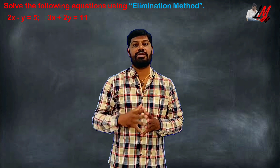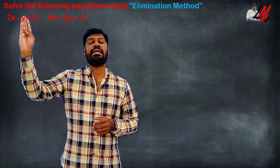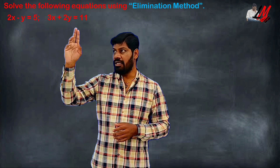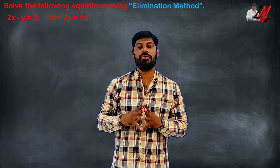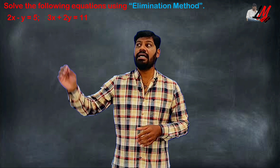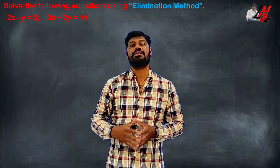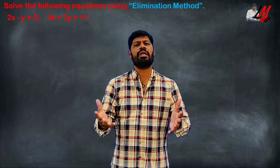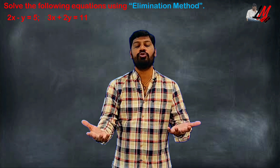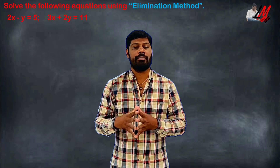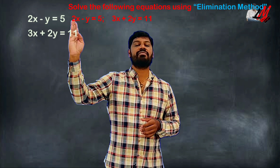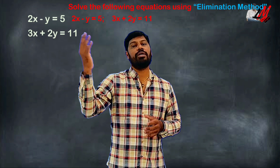Solve the given equations using the elimination method. First equation: 2x minus y equals 5. Second equation: 3x plus 2y equals 11. This is the elimination method, and we will write using this method. 2x minus y equals 5; 3x plus 2y equals 11.